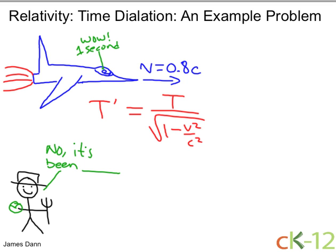This is the farmer's perspective. That's the time the farmer sees. Let me write this out clearly here. T prime is the time of clock as measured by stationary observer.